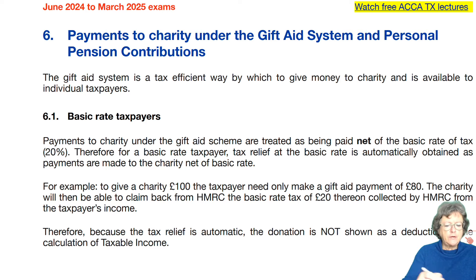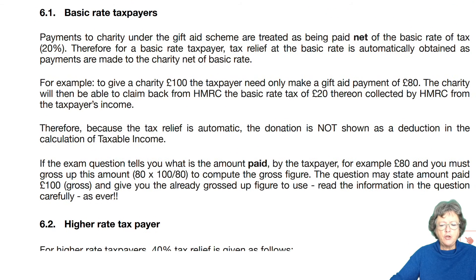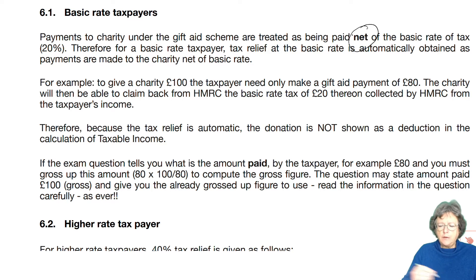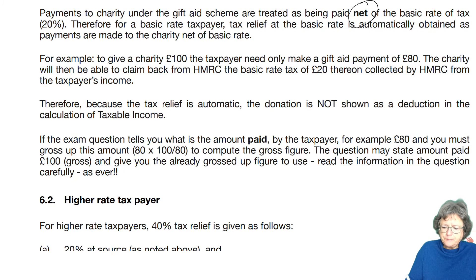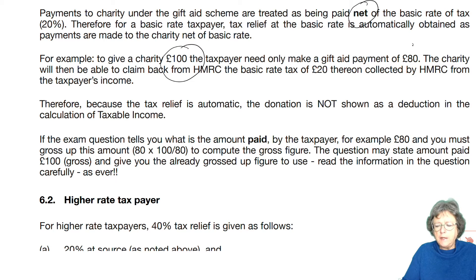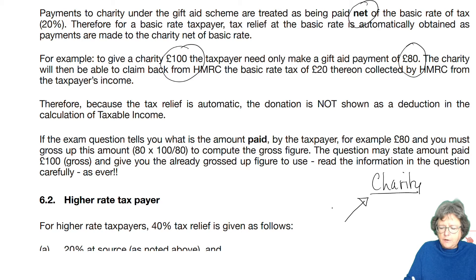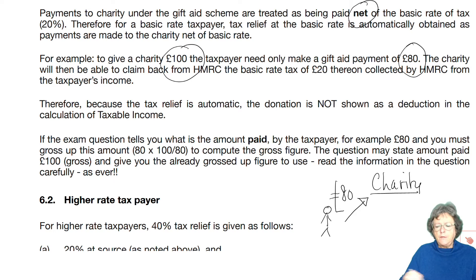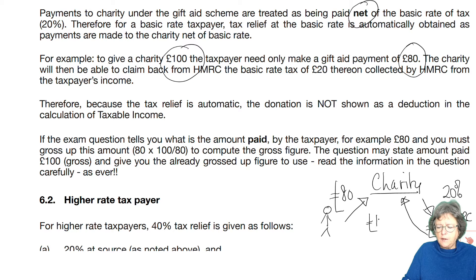If you are a basic rate taxpayer, then any payment that you make under the Gift Aid scheme is treated as being paid net. To give a charity £100, you only need to make the payment of £80. As an individual you give them £80, they then claim your 20% tax — £20 — from HMRC under the Gift Aid scheme, and the charity therefore has £100.